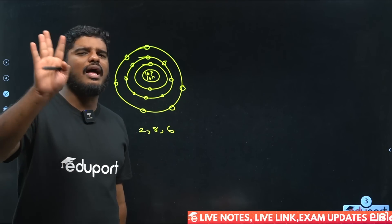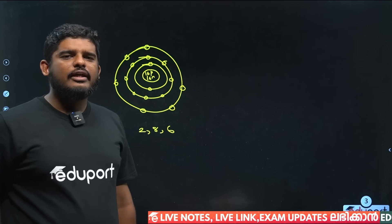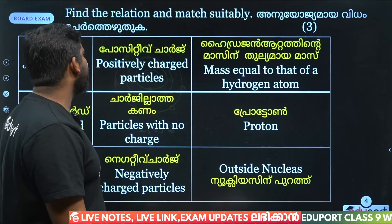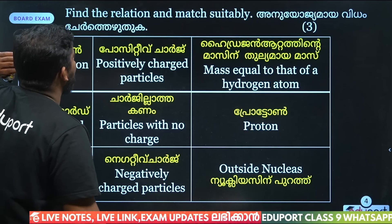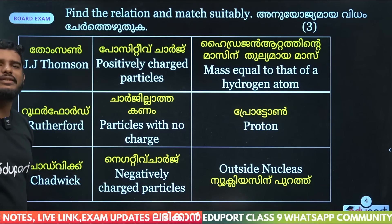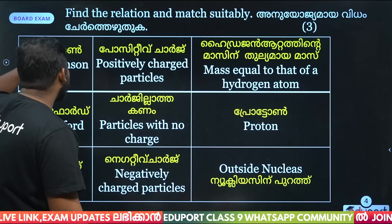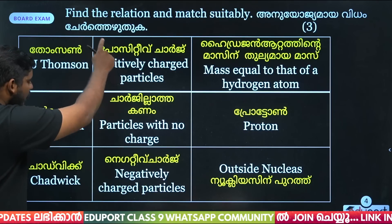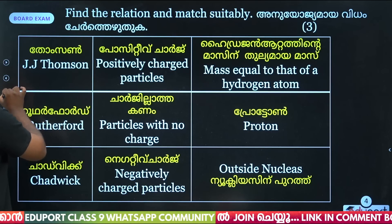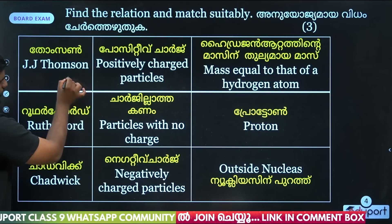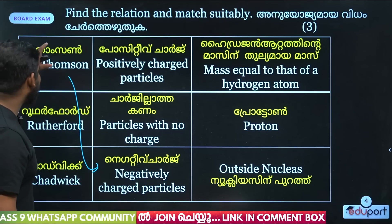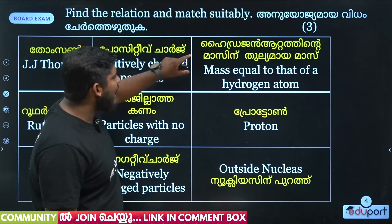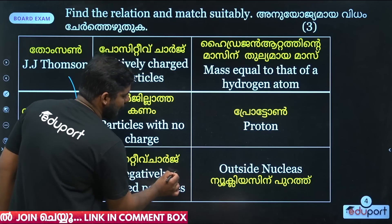If you want to make a score of 4 marks, find the relation and match them suitably. J.J. Thomson — he discovered the electron. Rutherford discovered the nucleus.